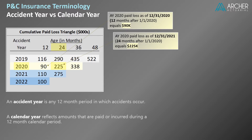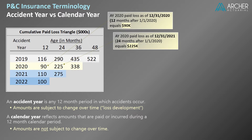The fact that amounts change over time is a key characteristic of an accident year. In the context of losses, this change is called loss development. As we'll see later, calendar year measures of losses are not subject to change over time.